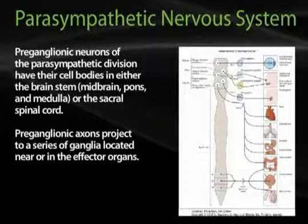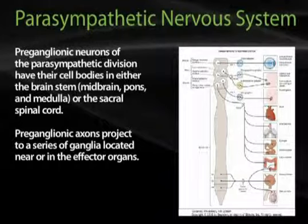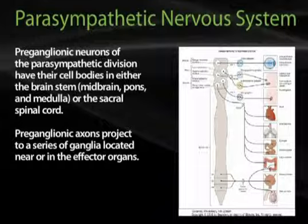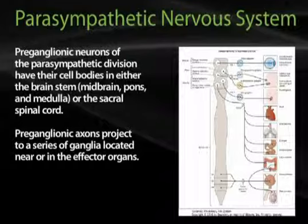Preganglionic neurons of the parasympathetic division have their cell bodies in either the brainstem — that is, midbrain, pons, and medulla — or the sacral spinal cord. Preganglionic neurons project to a series of ganglia located near or in the effector organs.